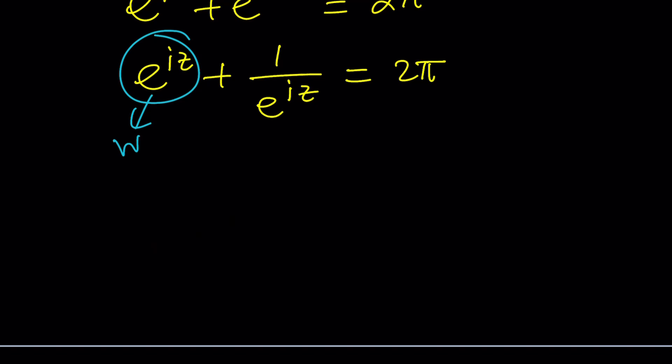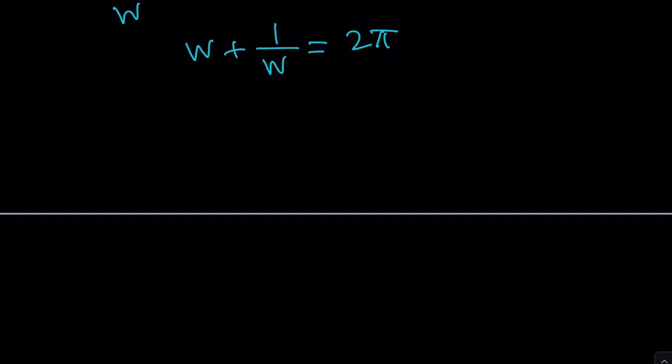Substitution is awesome, and we're going to use it. If you replace e to the iz with w, you get w plus 1 over w equals 2 pi. Multiply everything by w to get rid of the fractions because nobody likes fractions. No offense, fractions, but nobody likes you. W squared plus 1 is equal to 2 pi w. Now, how do you solve this equation?